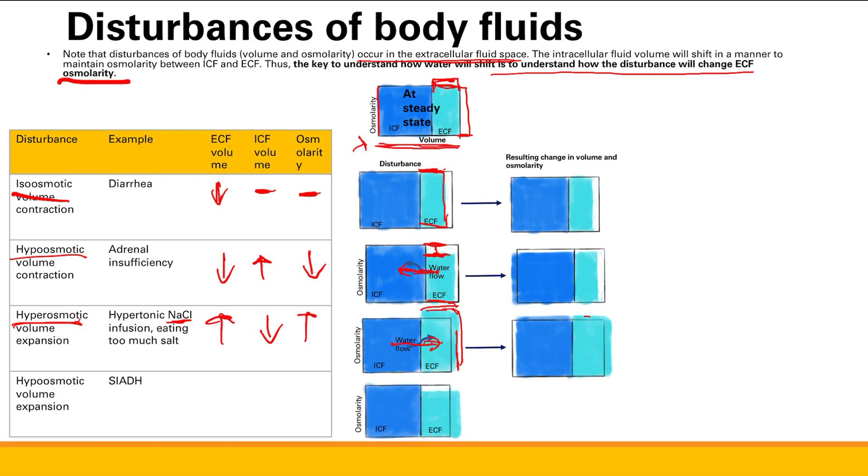Finally, hypoosmotic volume expansion. Something like SIADH, where you're retaining too much water. So you expand. But all that water is going to dilute, lower your osmolarity. So your extra ECF has lower osmolarity, higher volume. Water goes from low to high. So ECF volume is going to be up because originally we had a volume expansion. And ICF volume is going to go up too. Both of these go up. And then your osmolarity goes down.